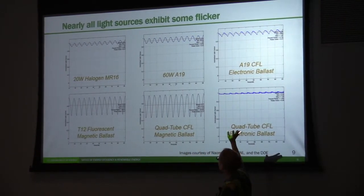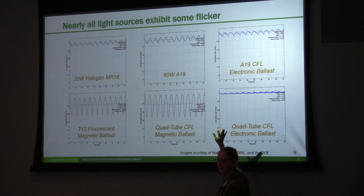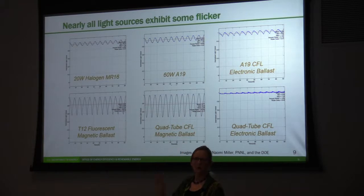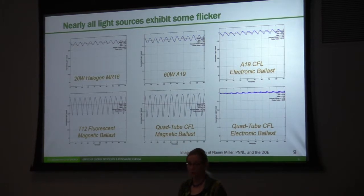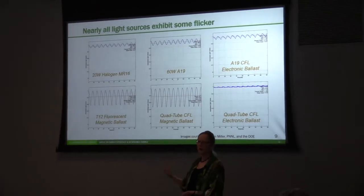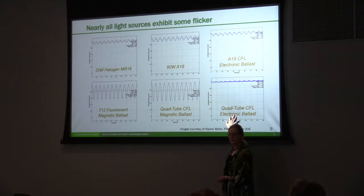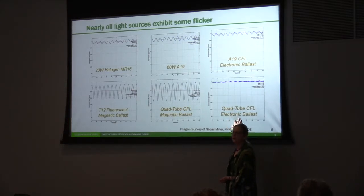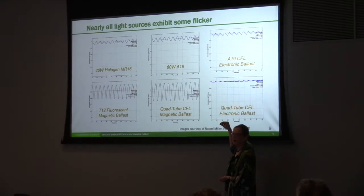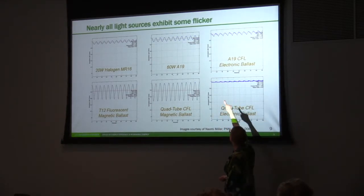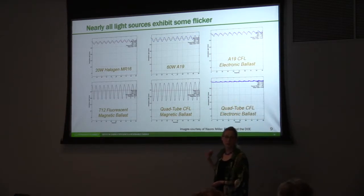When you go to an electronic ballast, that increases the frequency — you may be operating at 20,000, 30,000, 40,000, or 60,000 Hz. At that point, the brain is no longer able to pick up those rapid frequencies. So an electronically ballasted CFL has a tiny ripple on top, but basically the frequency is so fast it doesn't even register in the plot.